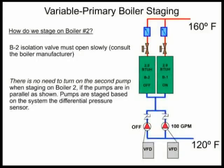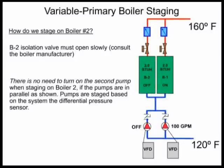In variable primary, there's no need to stage a second pump for boiler number two — if pumps are in parallel, one pump can run across both boilers. The pumps are staged by the differential pressure sensor in the system, controlled by the VFD controls or BMS, not by the boilers. Pump staging in variable primary is based on system conditions, independent of what the boilers are doing.